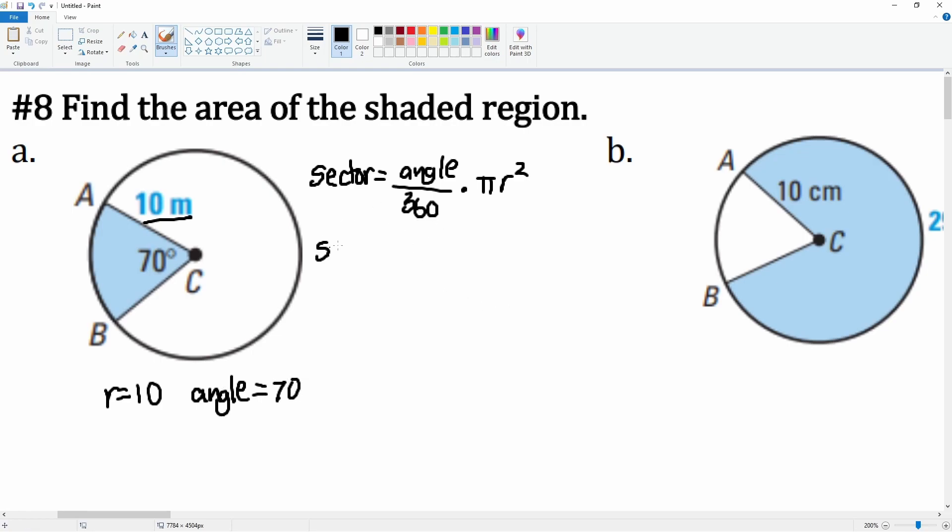So I can just plug it in. My sector is equal to 70 divided by 360 times pi times 10 squared. So 70 divided by 360, that gets me 7 over 36 times 100 pi.